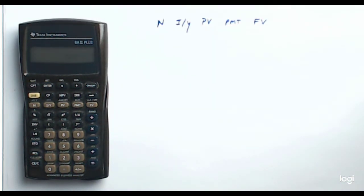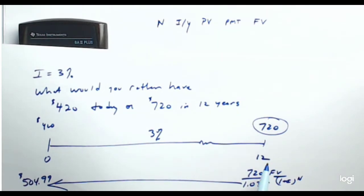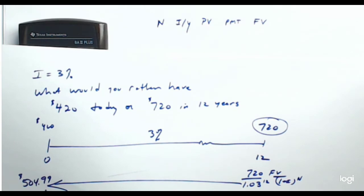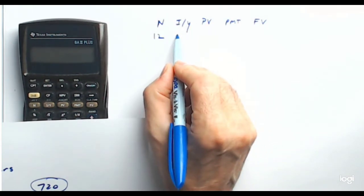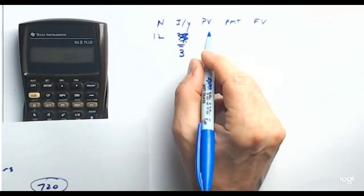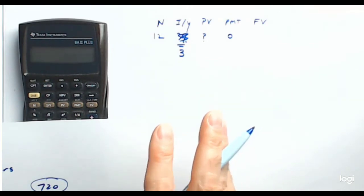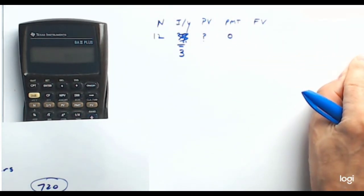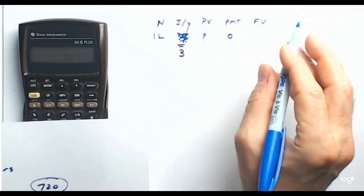Let's calculate using the calculator. We're given a future value and trying to compute the present value, with an interest rate of 3% and 12 periods. First, set N to 12, then the interest rate to 3 — you just put in three, no percent sign. We're solving for present value, so skip that for now. Payment is zero because this is a lump sum — payment applies to annuities with multiple payments in a stream. It's always zero for lump sums. Then input future value of 720.